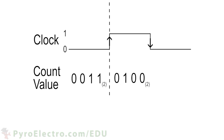A counter system typically doesn't require any input other than a clock input. When the clock changes from logic 0 to logic 1, the counter increments its current value by 1. So if the current value of the counter is 0011 and a clock change is detected, the counter will add 1 and the value will change from 0011 to 0100.